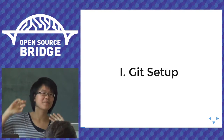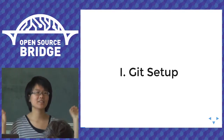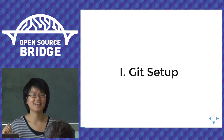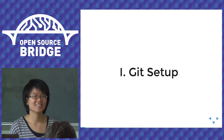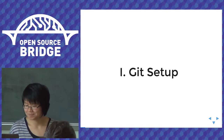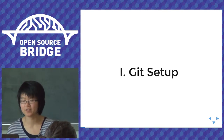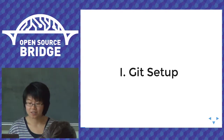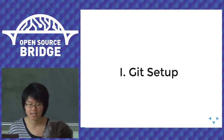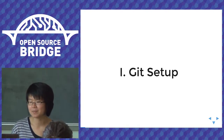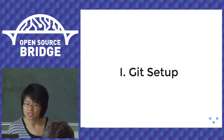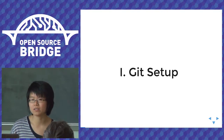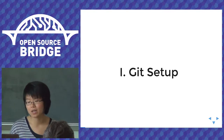How many of you have started learning Git in the past six to nine months? About a quarter of the people. So pretty much when you first learn Git, you go through setting up configuration files — that's literally step zero of learning Git. Learning how to do Git config files is really important and it can save you a lot of time.